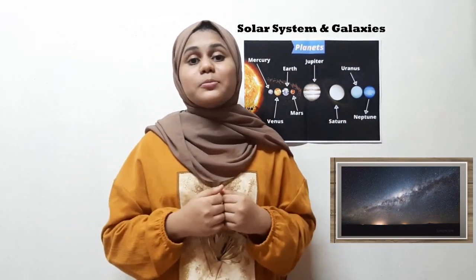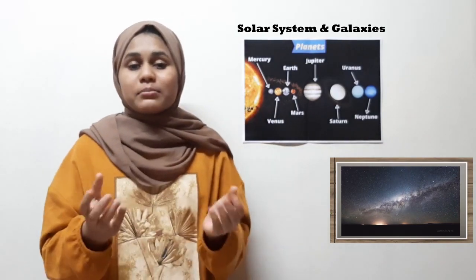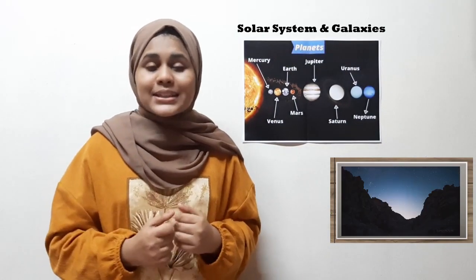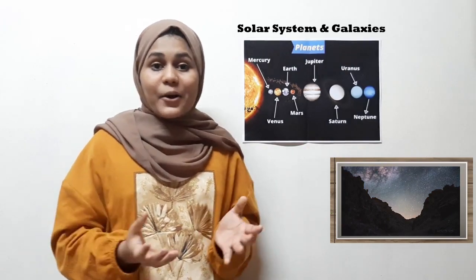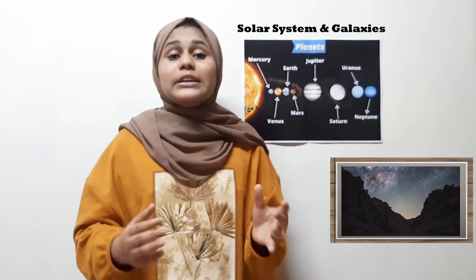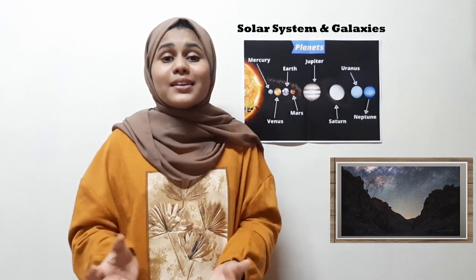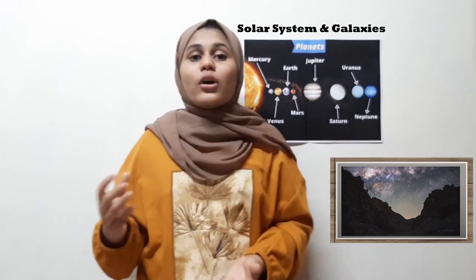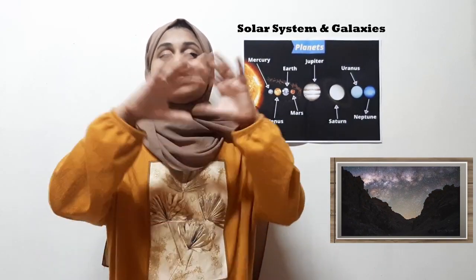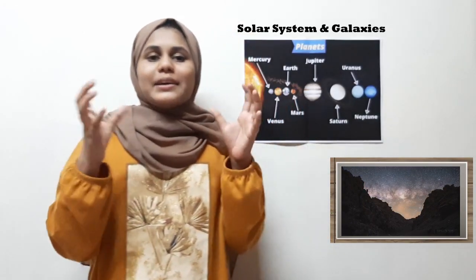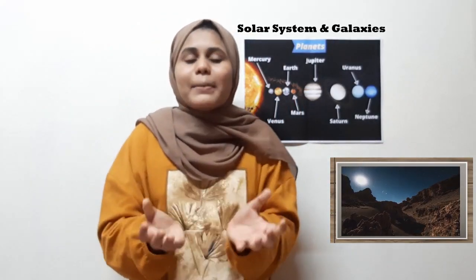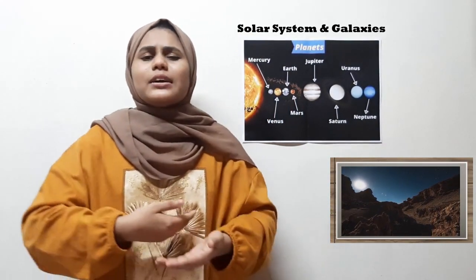Like all things, the Milky Way is also believed by astronomers to come to an end in 4 billion years. It is going to collide with another galaxy called Andromeda, and together they will form a very big galaxy. They have already started moving toward each other, but it will take very long before they collide.